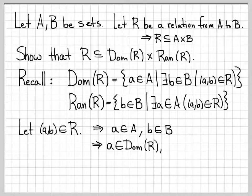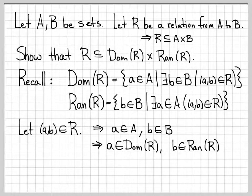We can do the exact same reasoning to conclude that b has to be in the range of R. Looking at the definition of the range of R, we need there to exist an a in A with (a, b) in R. We have (a, b) in R and we have an a in A. So the b that we have is in B and it is in the range of R — we conclude that b is in the range of R.